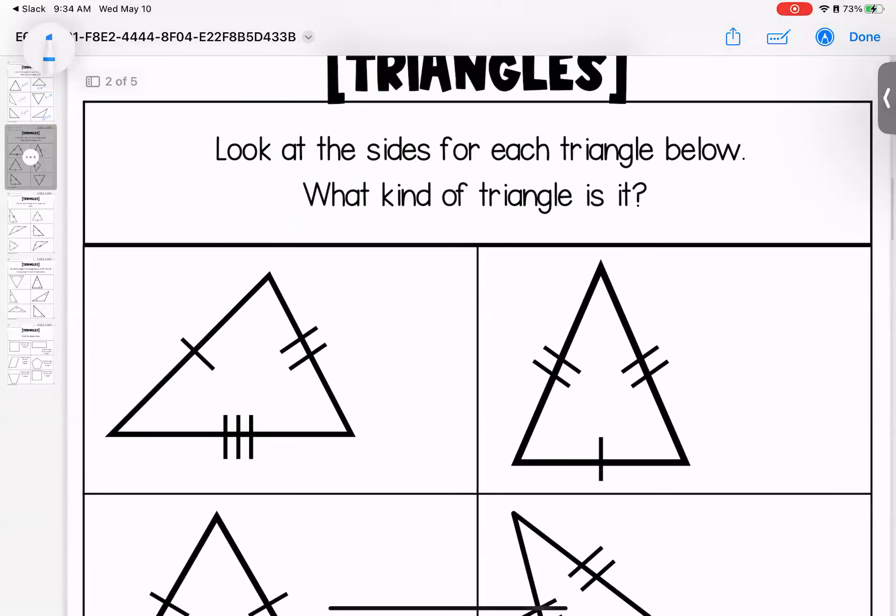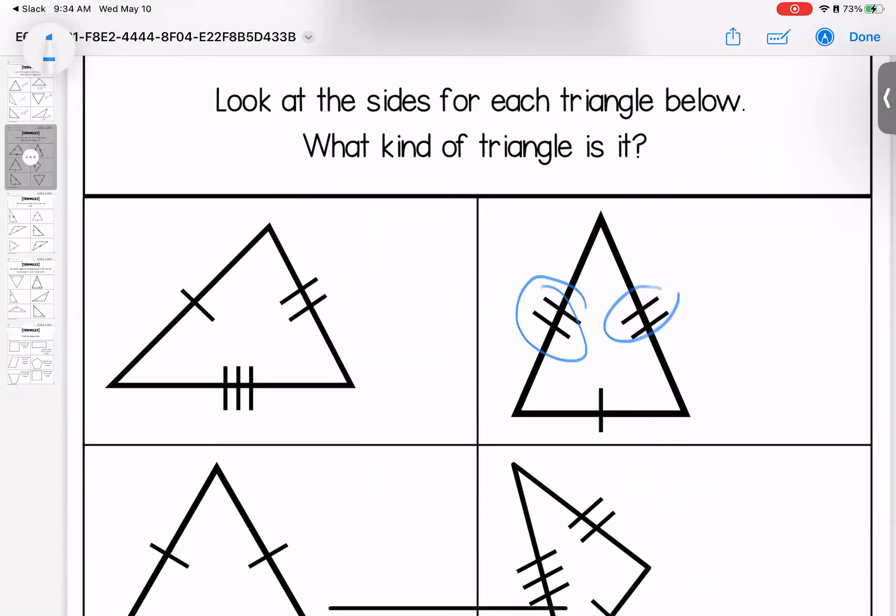Looking at sides, you'll notice that the sides are marked up for you. Any sides that have the same marking means that they are equal. So these three are all different. This is going to be scalene.